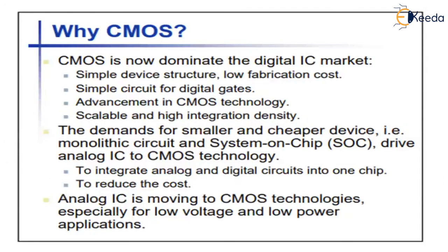Next, why CMOS? Why do we still need CMOS? A CMOS gate dissipates power only during switching. It was also discovered that MOS devices could be scaled down very easily compared to any other transistor.